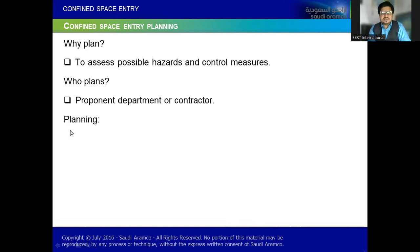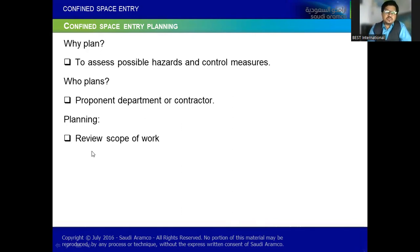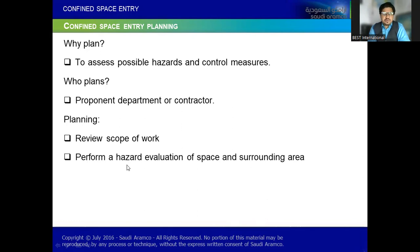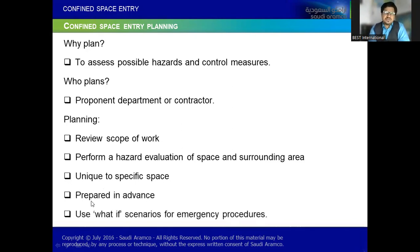What are the important things in planning? The scope of work is very important. What exactly are you going to do for Saudi Aramco? For example, whether the project involves maintenance, repair in a process, shutdown, welding, and similar work — that defines the scope of work. It is also important to perform hazard evaluation of the surrounding area, prepare unique specific hazards in advance, and consider 'what if' emergency scenarios.